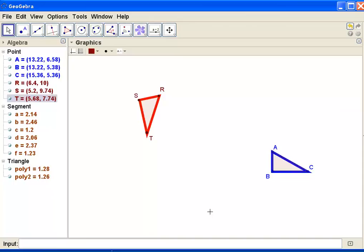I think I'm going to start by translating, and I want to translate so that point A matches up with point R. That will fix one of my points.